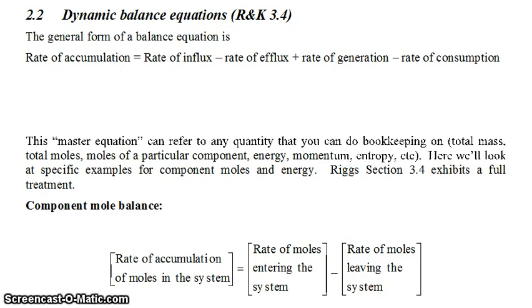The general form of a balance equation is that you have the rate of accumulation equals the rate of influx minus the rate of efflux plus the rate of generation minus the rate of consumption for any process variable that you're trying to keep track of.